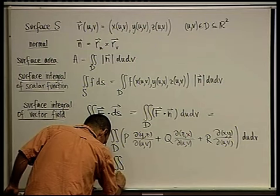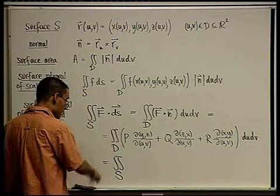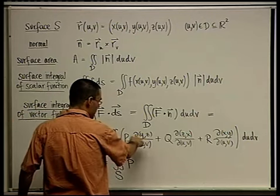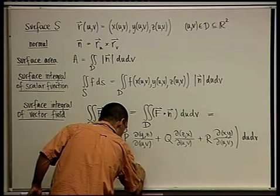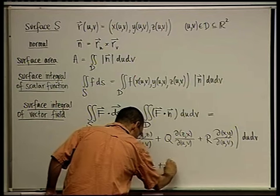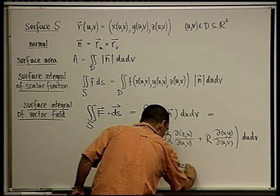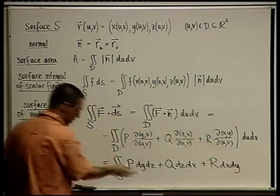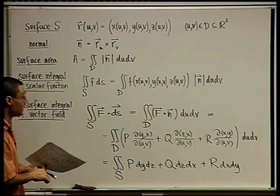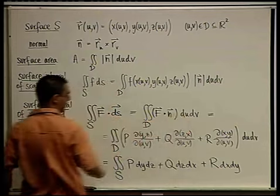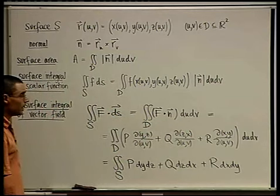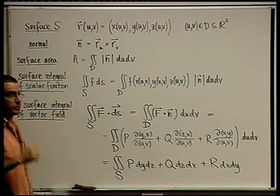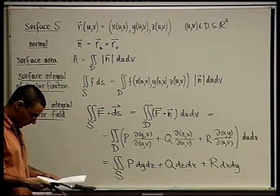A shorthand notation — analogous to line integrals — also writes this as ∫∫_S P dy dz + Q dz dx + R dx dy. Again, this is just notation, not something you can actually work with. What this measures is the flux of the field through the given surface.